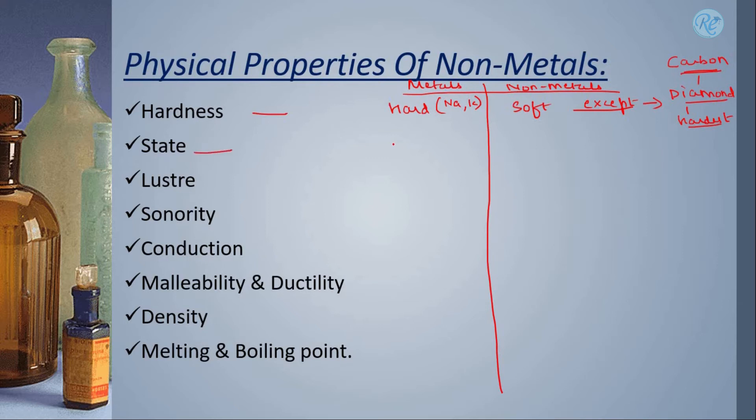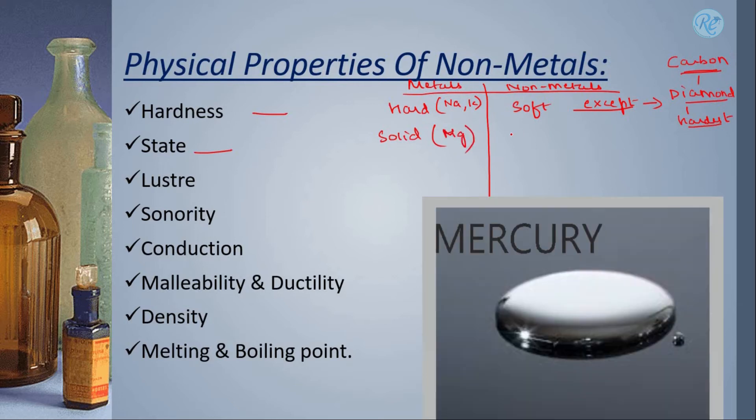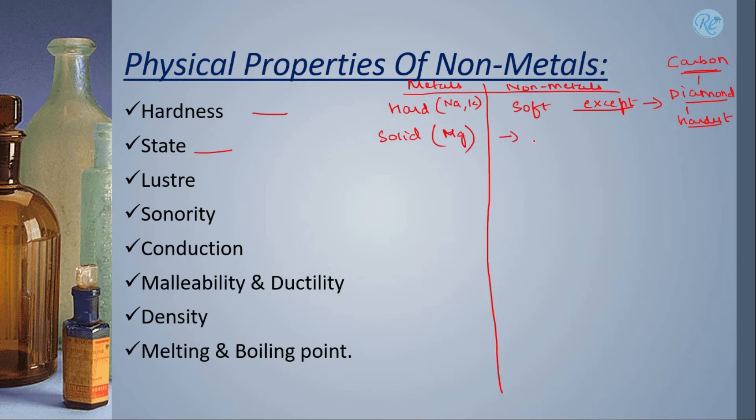In case of state, we know that generally metals are solid in state. Again, we had an exception of mercury. And in case of non-metals, non-metals are generally liquid or gaseous in their state or in their nature.